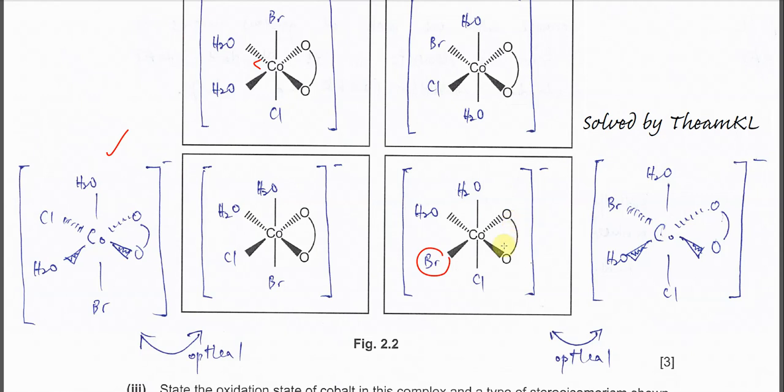Okay, in the same plane with the bidentate ligand. And after that, this one also can form another optical isomerism. Okay with this one. So if you rotate 180 it will form a mirror image which is non-superimposable to this one.